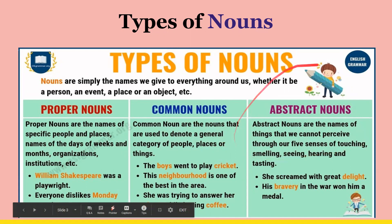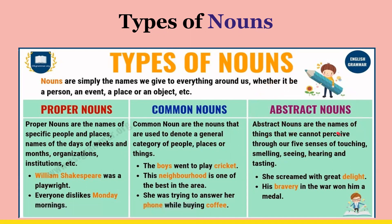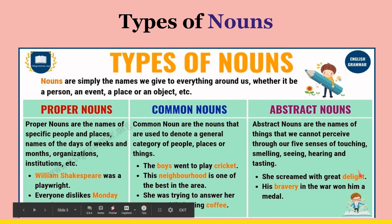Then we have abstract nouns. Abstract nouns are the names of things that we cannot perceive through our five senses, which are touching, smell, seeing, hearing, and tasting. She screamed with great delight. His bravery in the war won him a medal. We cannot see bravery and we cannot see delight.